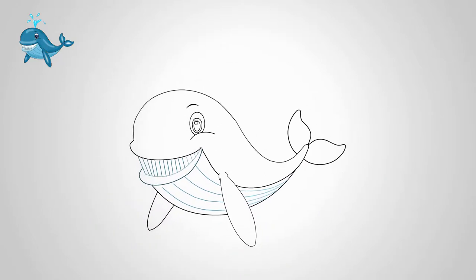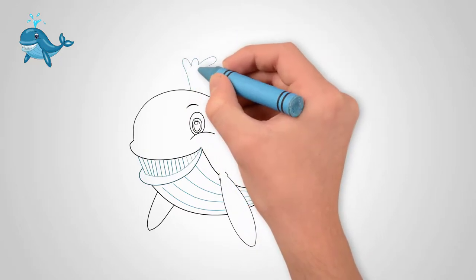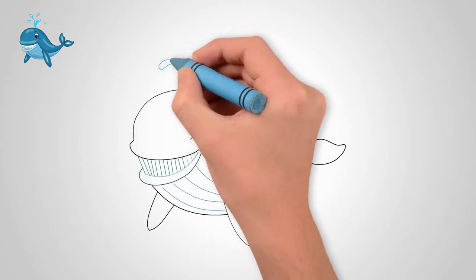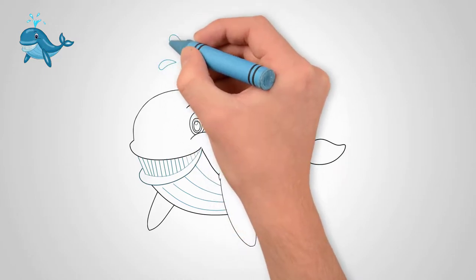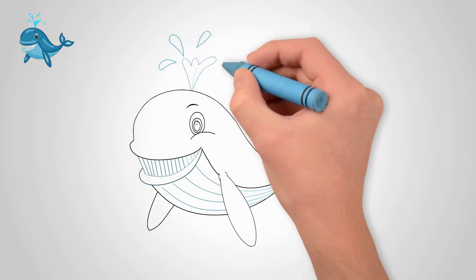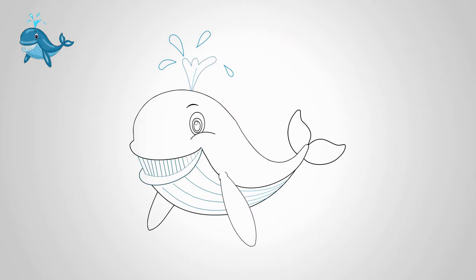Each whale has a fountain on its head from time to time. Draw a water fountain on the whale's head. Also draw a few drops of water that separate from the fountain. The whale draws in water with the fish and then releases the water through its teeth, leaving the fish inside. Remains of water come out in a fountain through a hole in the head.